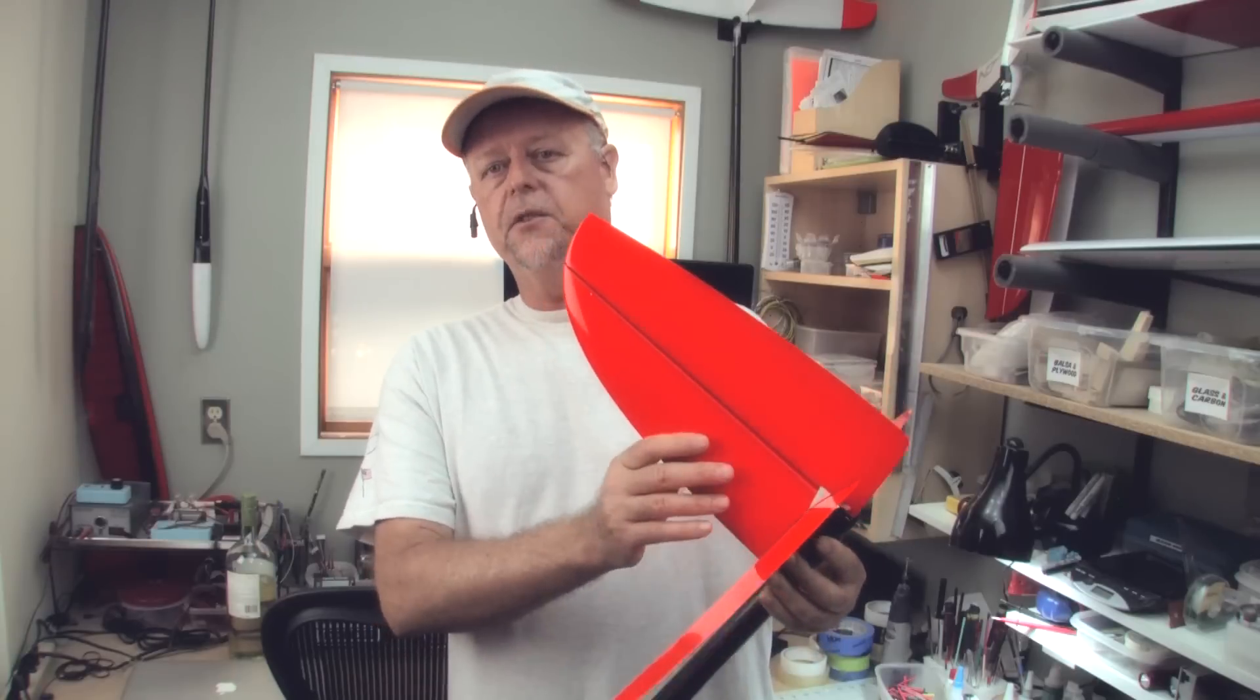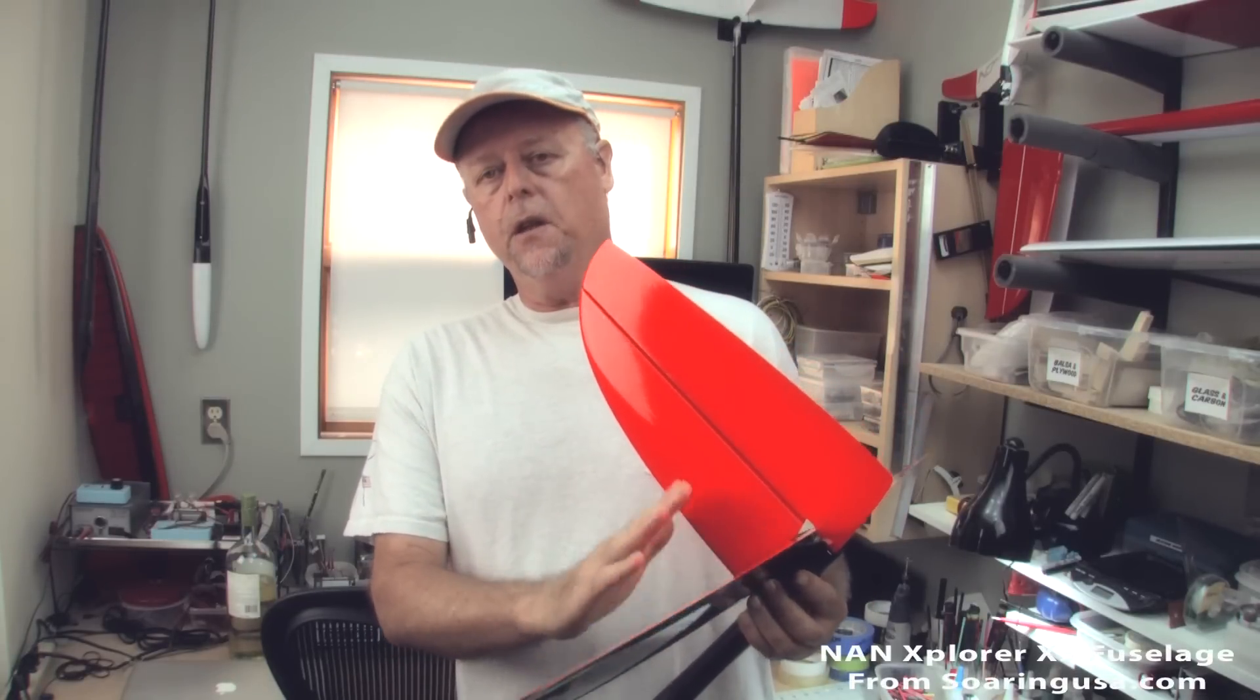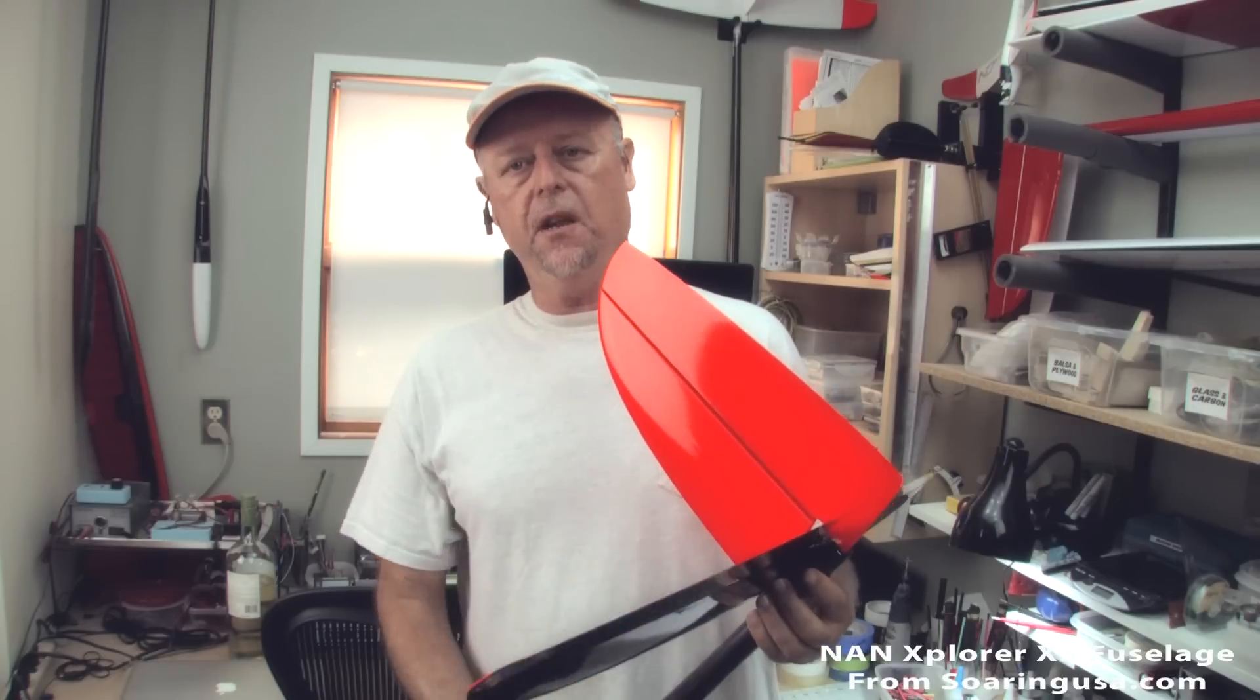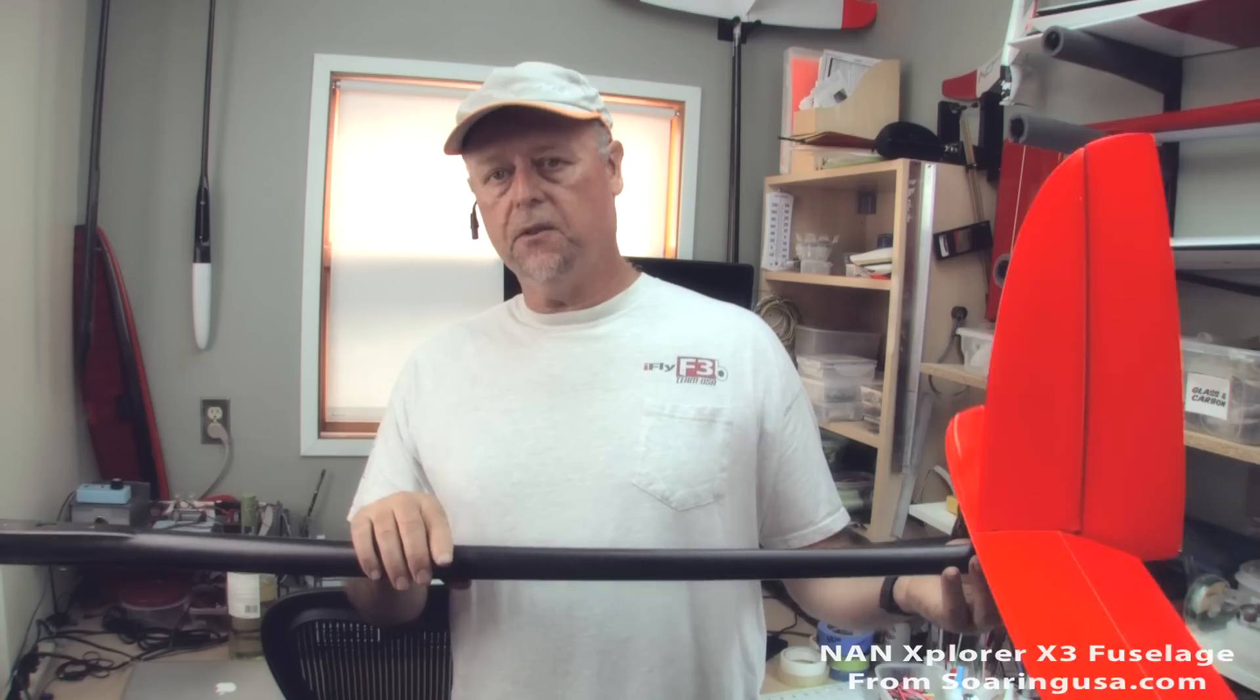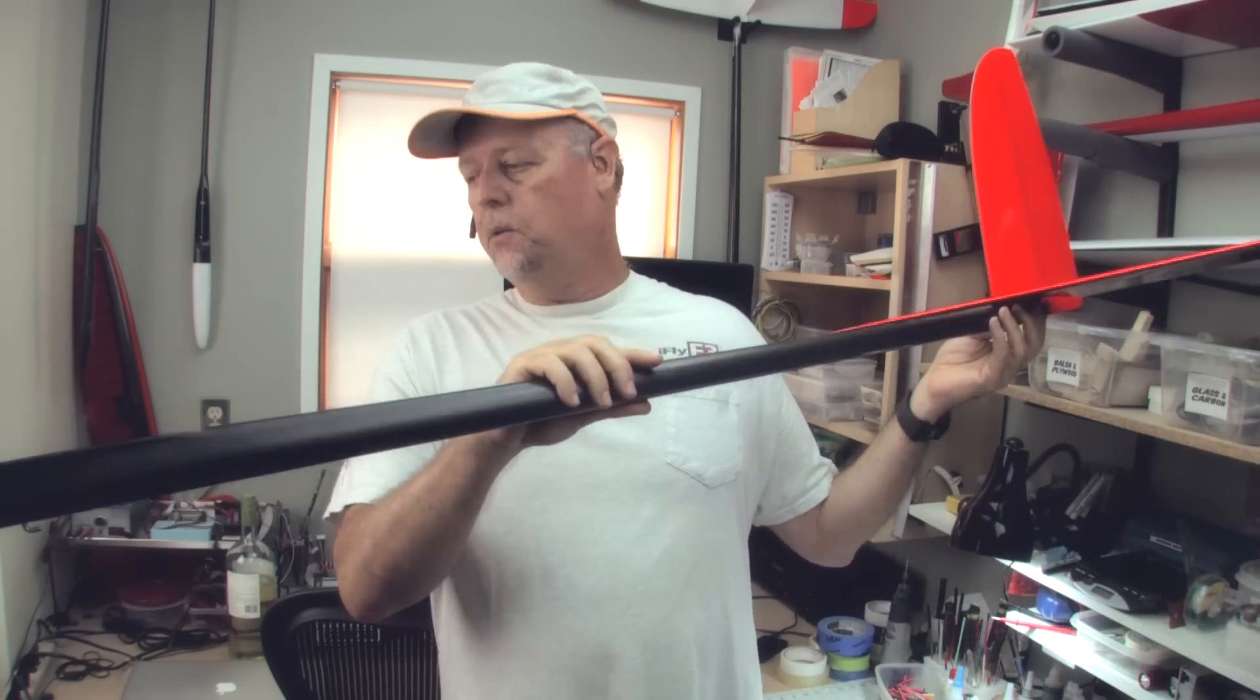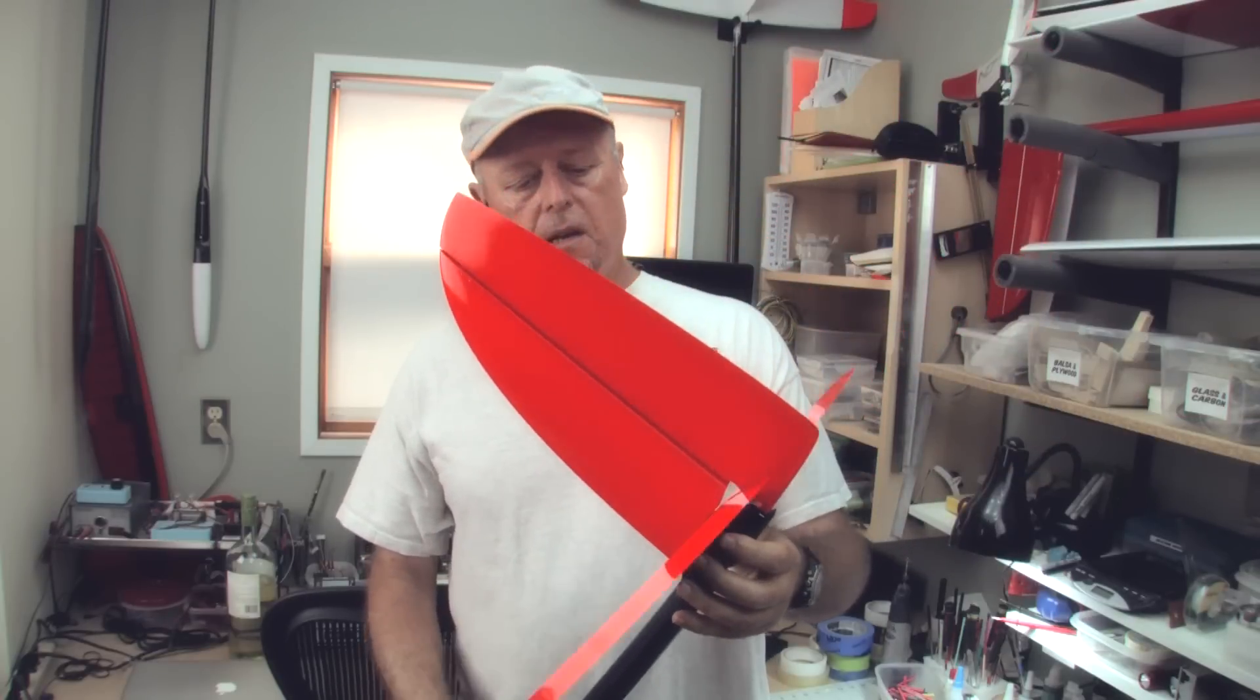So this is the new X3 fuselage configuration with a new modular tail that they've come up with. They've ditched the full flying stab and gone to a flapped horizontal stab. This kind of reminds me of the old school slope razors we used to do back in the 90s and early 2000s. It's pretty much an old school sort of shape in the fuse. I think it's pretty cool. It's simple, it's light, it's strong.